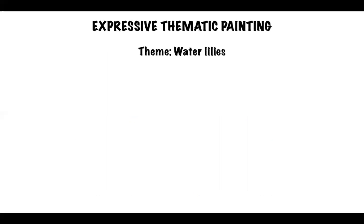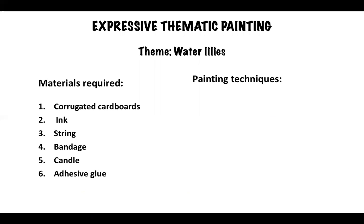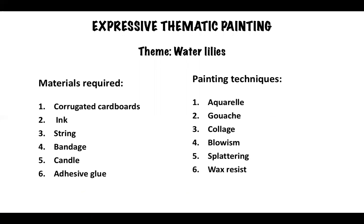Now I will show you how to make an expressive thematic painting based on the theme water lilies. You will need the following materials: corrugated cardboard, ink, string, bandage, candle and adhesive glue. Painting techniques will include aquarelle, gouache, collage, blossom, splattering and waxless resist.